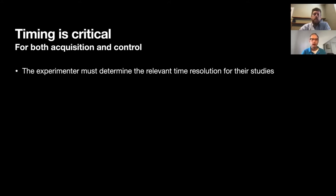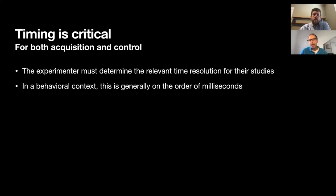Timing is super critical, and it's important both for control and acquisition — it can get away from you to some extent. You, the experimenter, have to decide what time resolution is important for the experiment you're running. For behavior and behavioral monitoring, this number is usually on the order of milliseconds, which by an engineer's standard is incredibly slow, but by a neuron standard that's about how a neuron operates. By the standard of general responsiveness of computers on your laptop and desktop, that's actually a little bit fast to be sure things are happening reliably in the order of milliseconds.